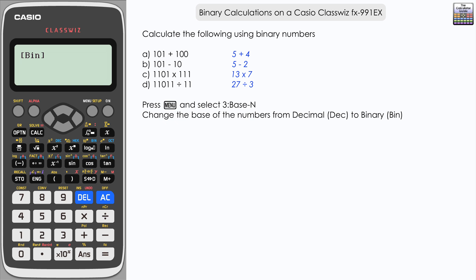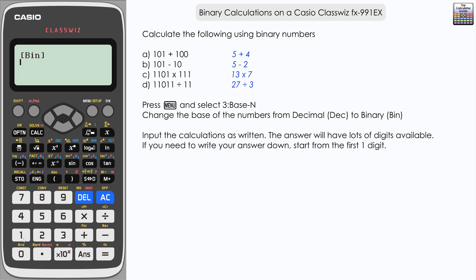From here it's relatively simple, we just need to input our binary numbers. Starting with 101 plus 100 we press equals. Now you can see that we have a lot of digits displayed. If we're going to write our answer down we're just interested in starting from the first one digit and then carrying on from there.